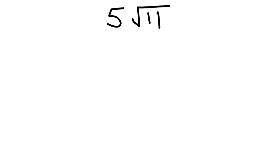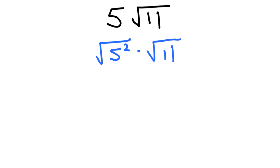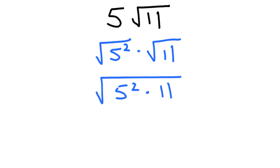Instead of turning that 5 into the square root of 25, I'm going to rewrite it as the square root of 5 squared. We know 5 squared is 25. The reason I'm doing it this way is it's really easy to see — I'm just going from a 5 to a 5 squared, you don't even have to think about what the square root of 25 is. And of course I'm multiplying it by the square root of 11. Since we have two radicals, we can merge them together so they're all under one root sign, giving us the square root of 5 squared times 11.